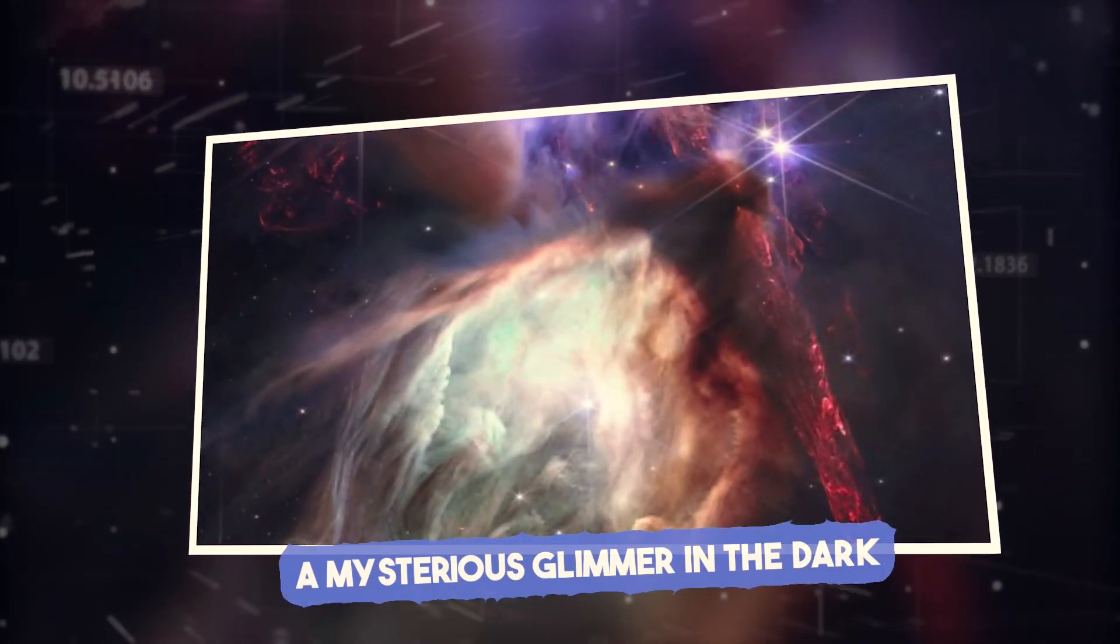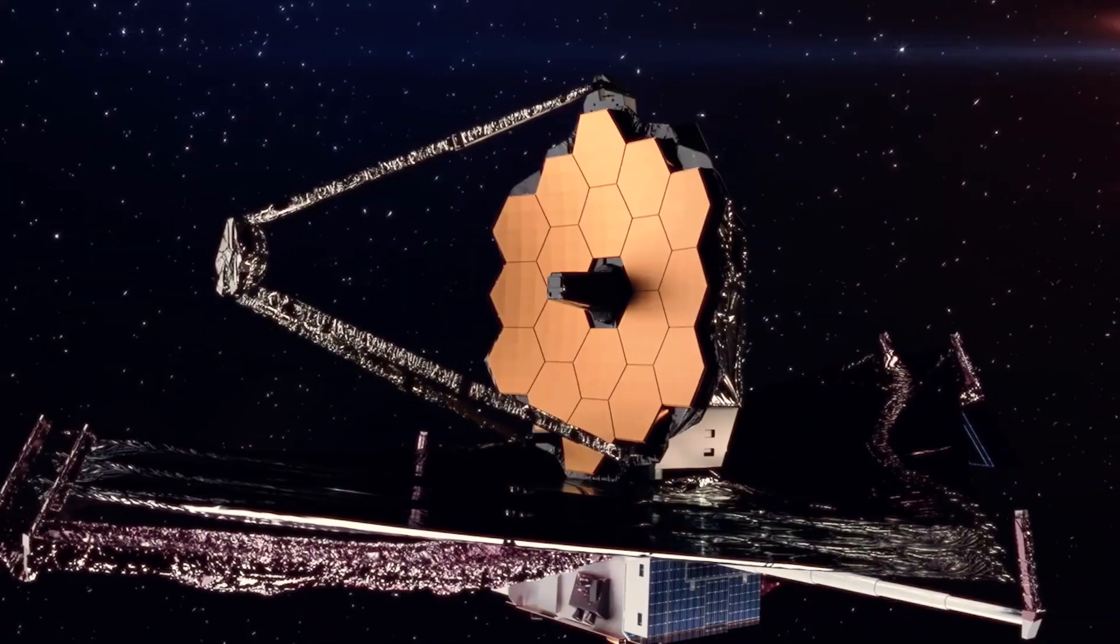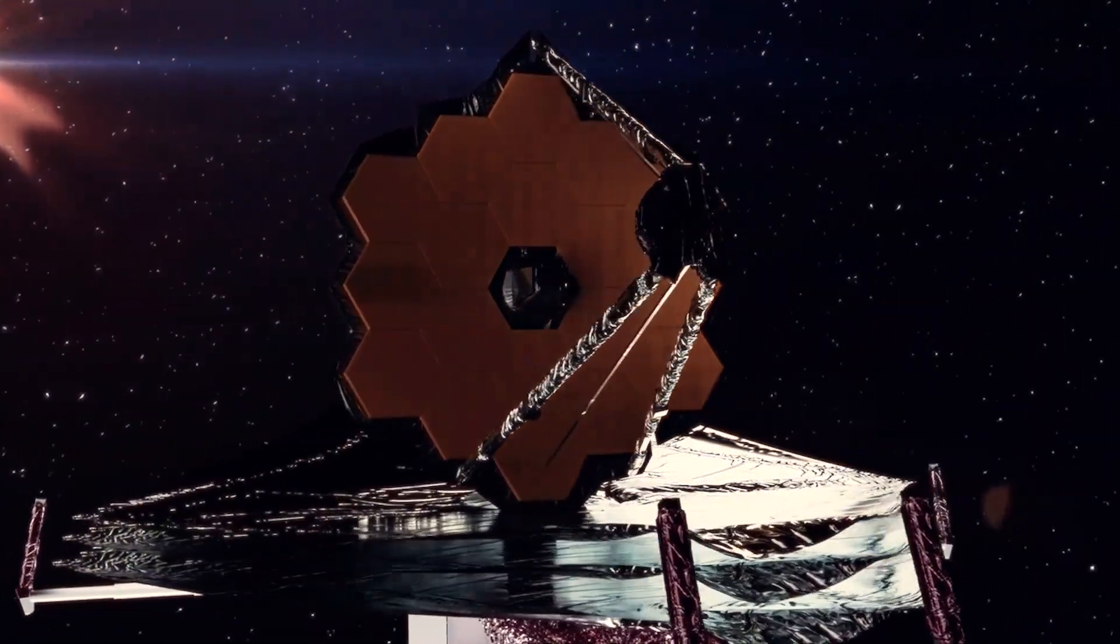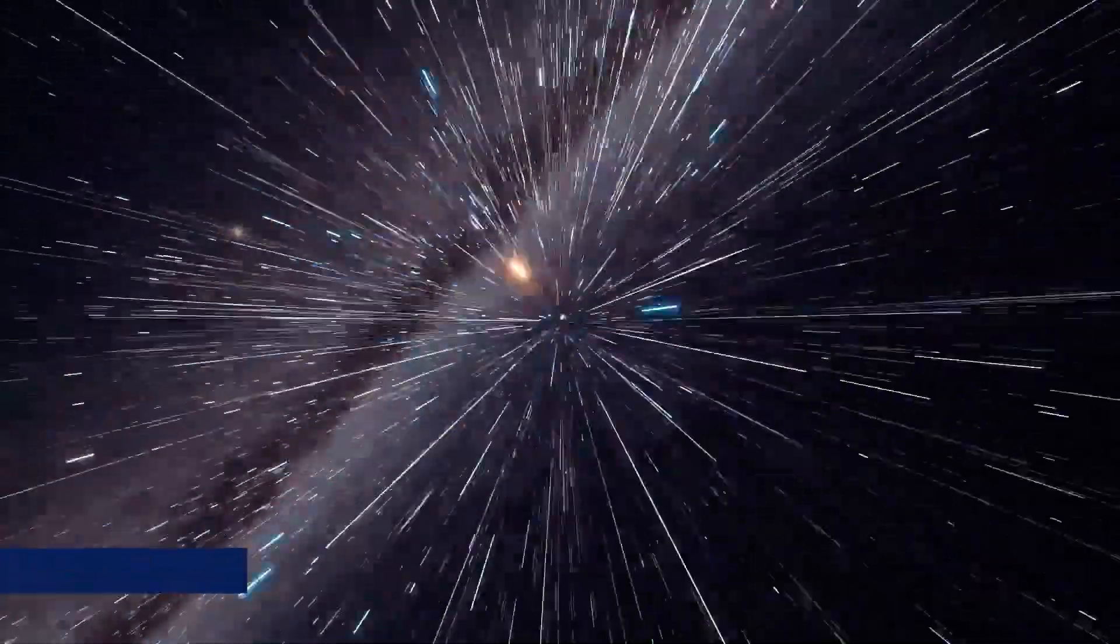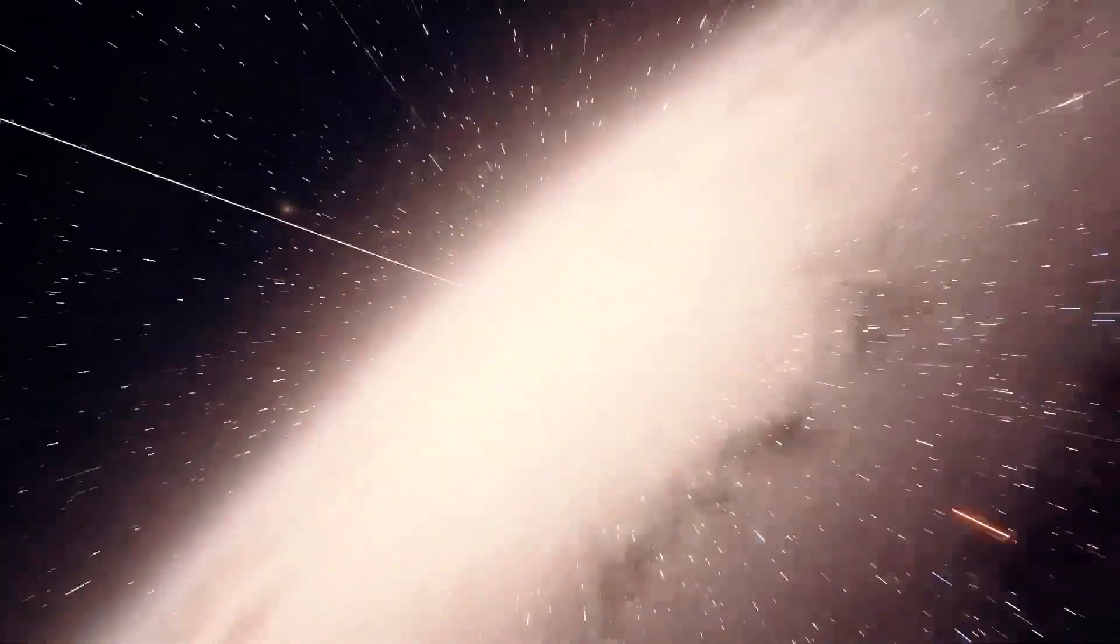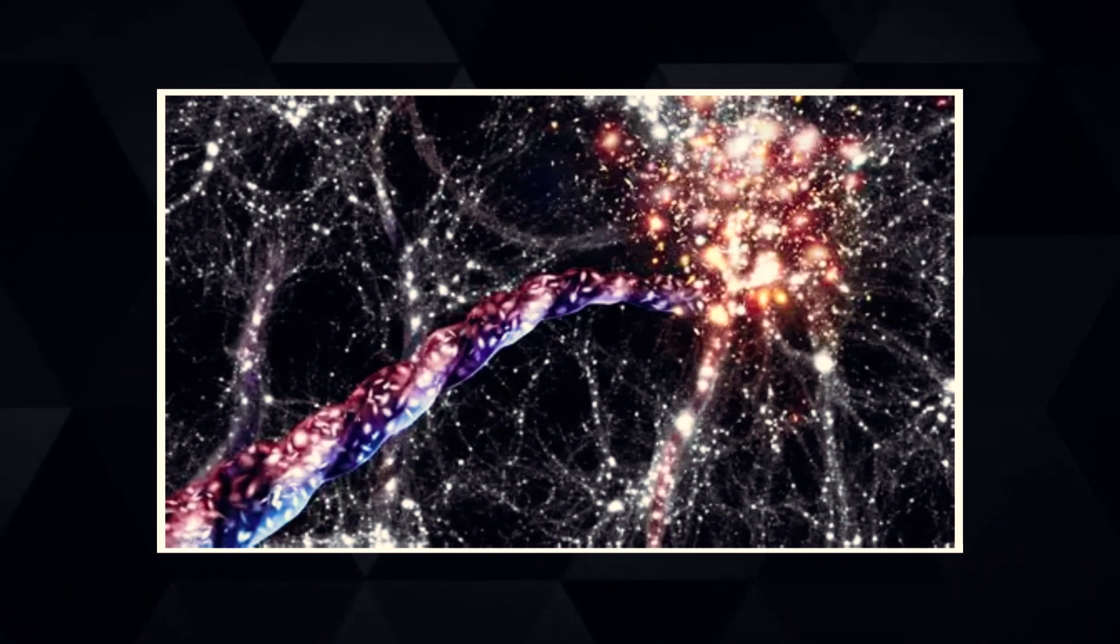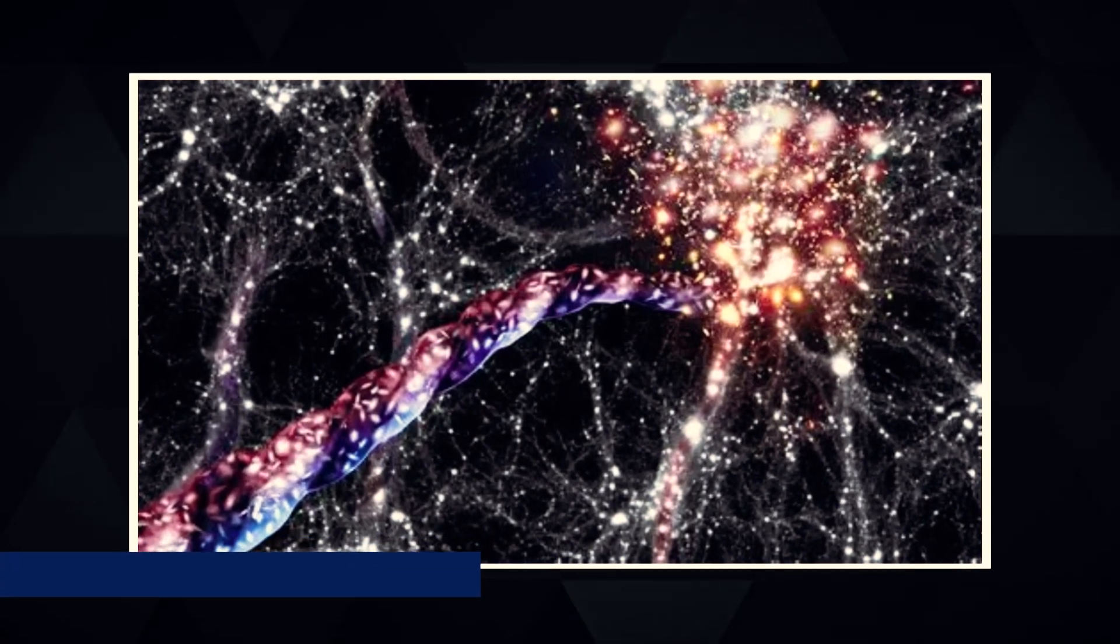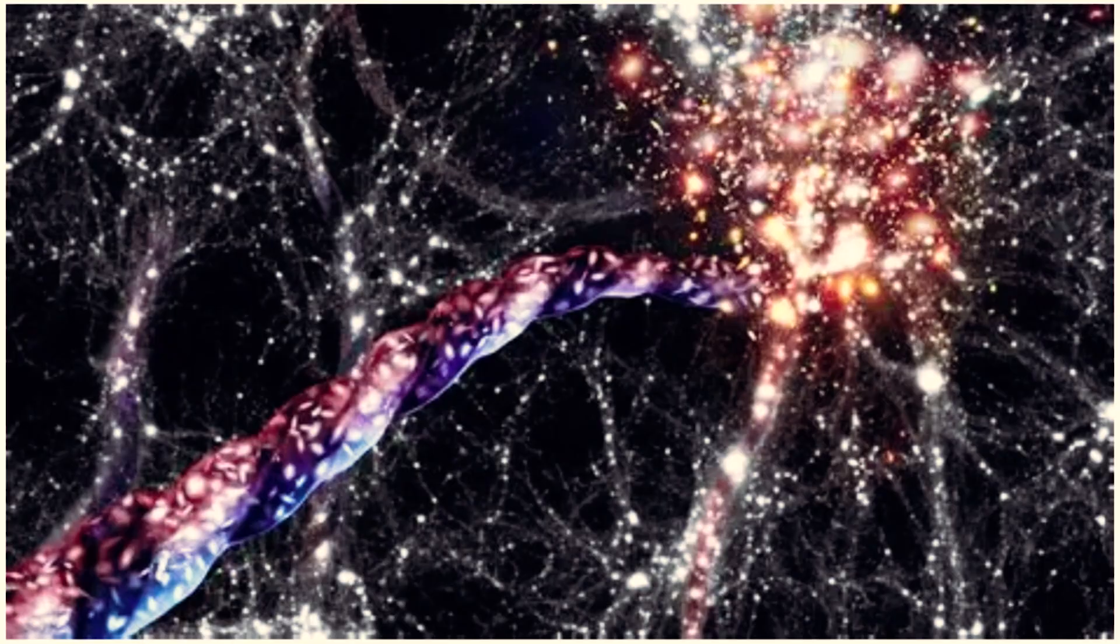A mysterious glimmer in the dark, it began quietly, just a faint signature in a sea of infrared data from the James Webb Space Telescope, pointed beyond the thickest part of the Milky Way's disk. The object itself wasn't obvious at first. What caught researchers' attention was the structured, filament-like shape.